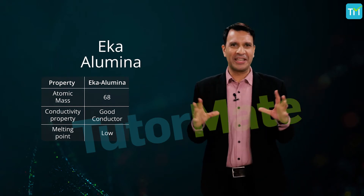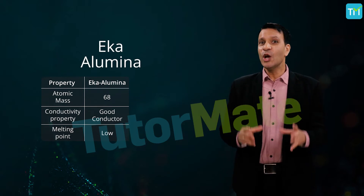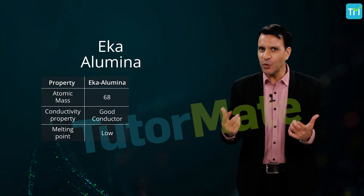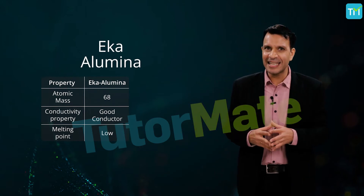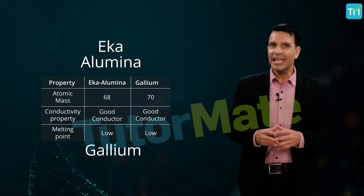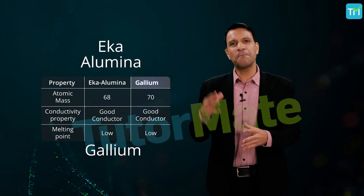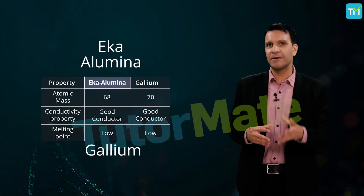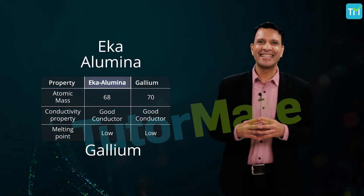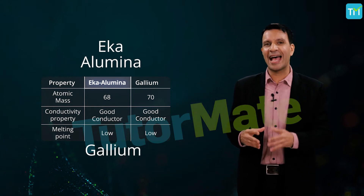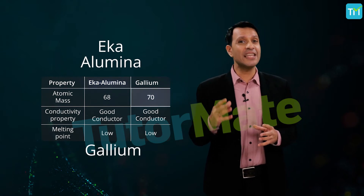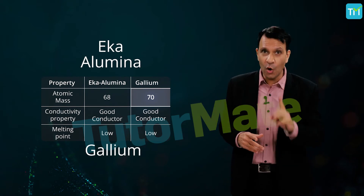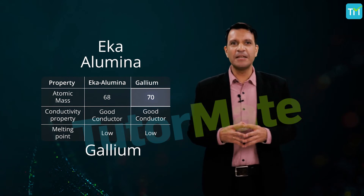And guess what — when the missing element was discovered, it turned out that Mendeleev was right. After a few years of his prediction, a scientist discovered a new element and named it gallium. Gallium is placed after aluminium in the present periodic table. Eka-aluminium is now officially known as gallium — its atomic mass is nearly 70, it is a good conductor of electricity, and it is solid at room temperature with an extremely low melting point.